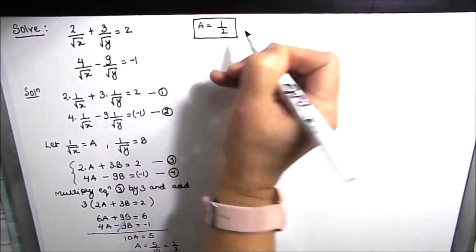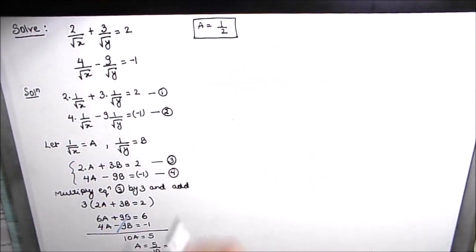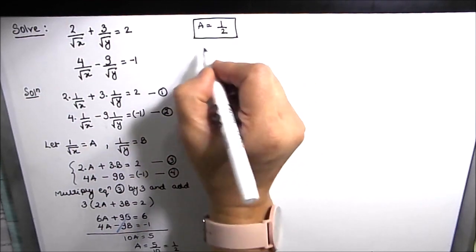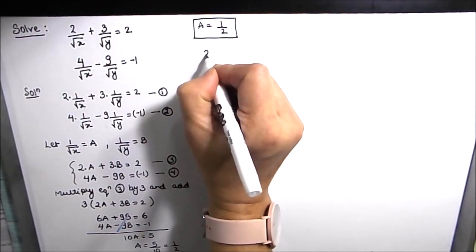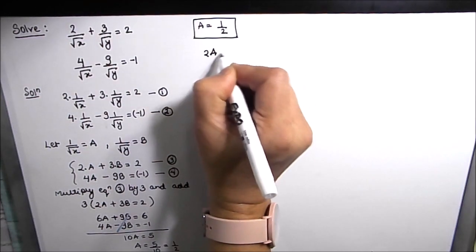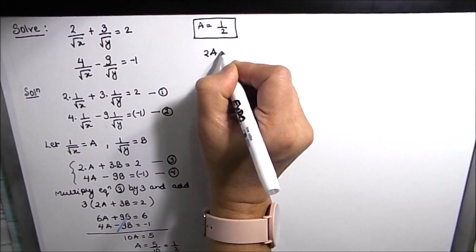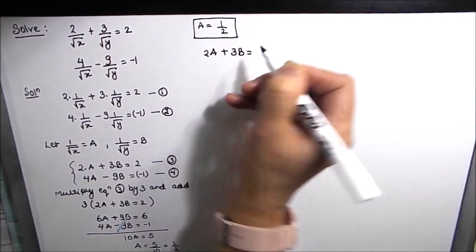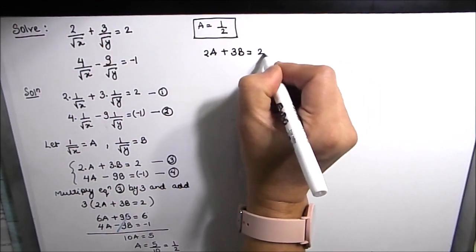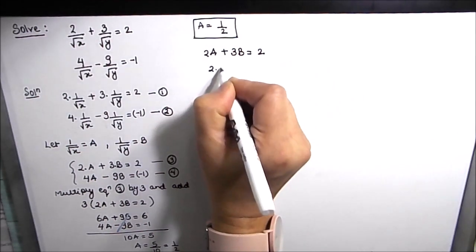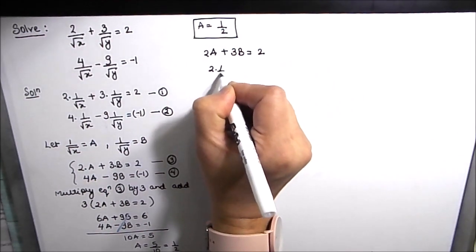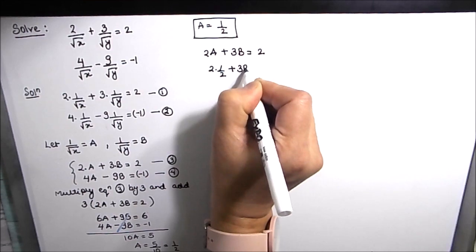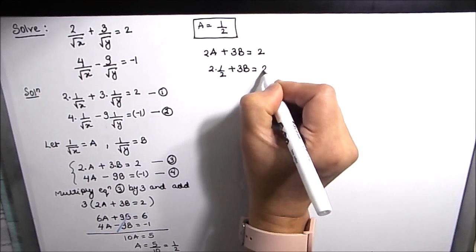Now let's find the value of B by substituting A equals 1/2 into equation 3. Writing the equation: 2A plus 3B is equal to 2. So 2 times (1/2) plus 3B is equal to 2.